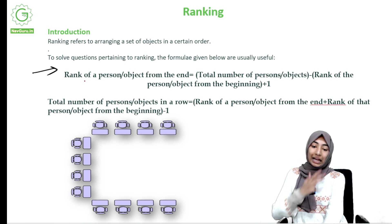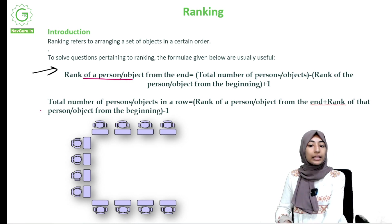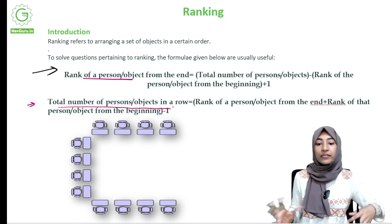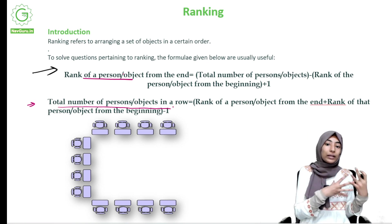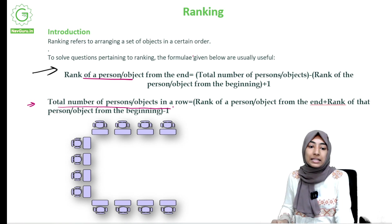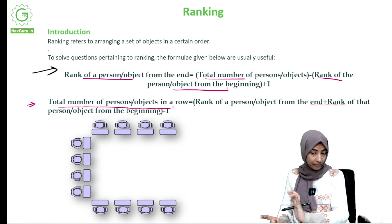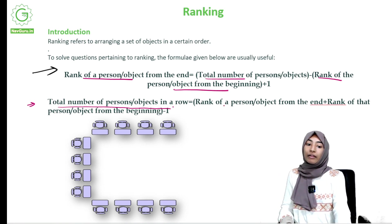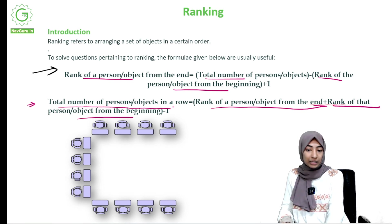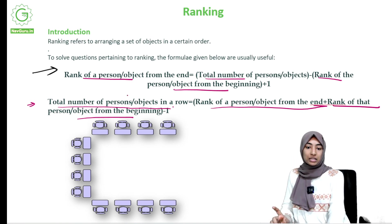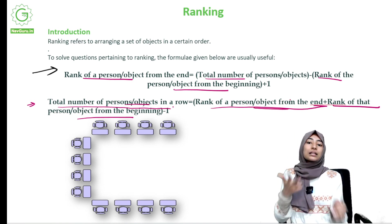One way is finding the rank of a person or object from the end, and then another was how to find the total number of persons or objects in a row. So basically, if you have the total number of people and the rank of the person from the beginning, you can find the person's rank from the end. There's a relationship between these three things: total number of people, rank from the end, rank from the beginning.